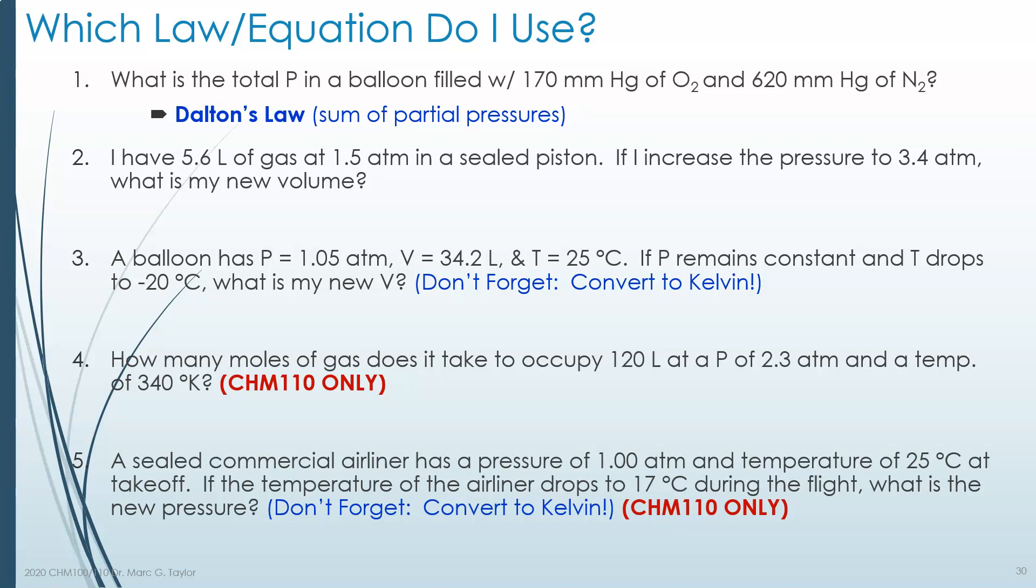The second problem says I have 5.6 liters of gas at 1.5 atmospheres, and you're told it's a sealed piston. So sealed tells you the number is constant. If I increase the pressure to 3.4 atmospheres, what is the new volume? We're going to assume the temperature is constant as well. So the only thing we're changing are volume and pressure. That is Boyle's Law.